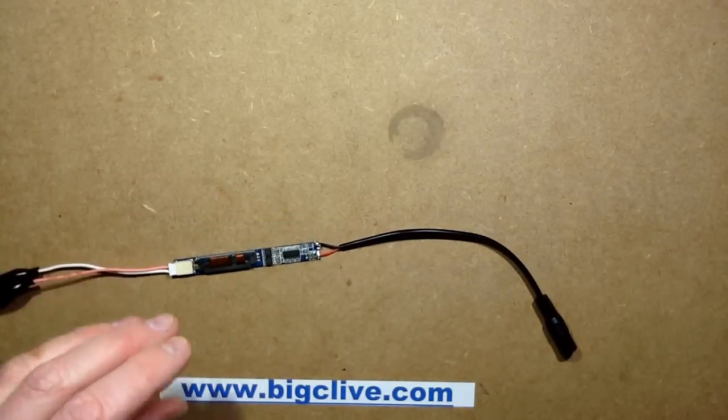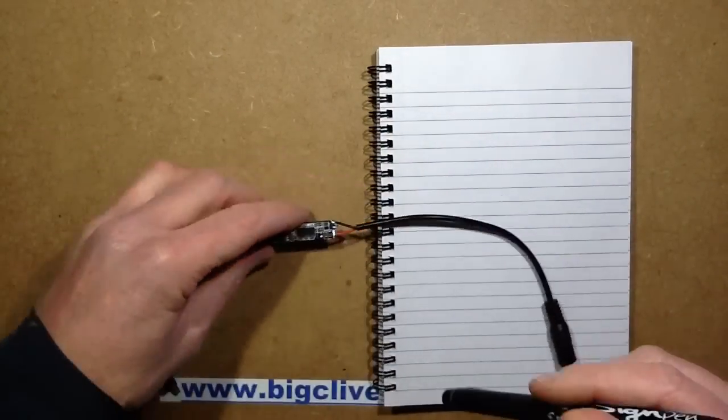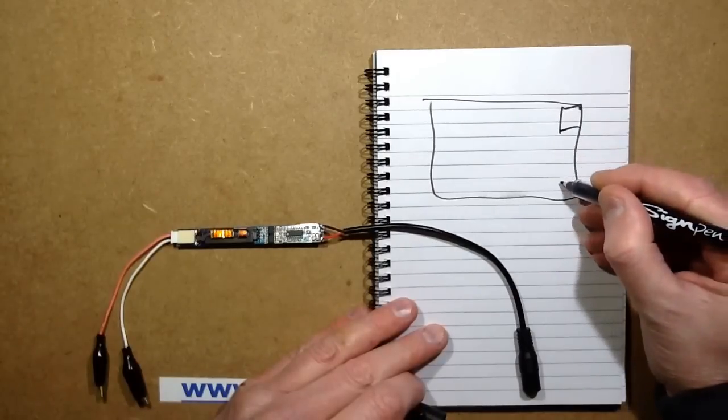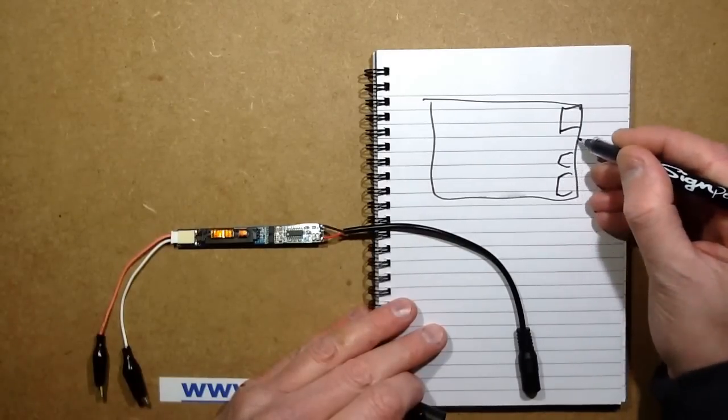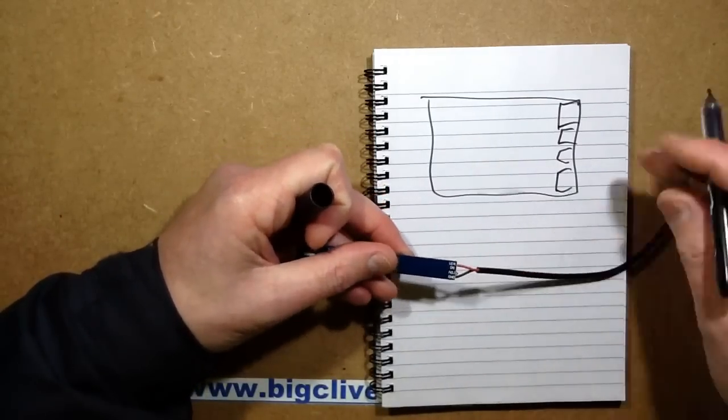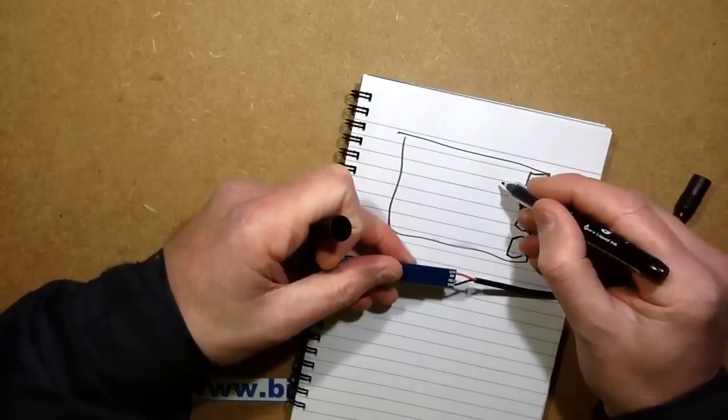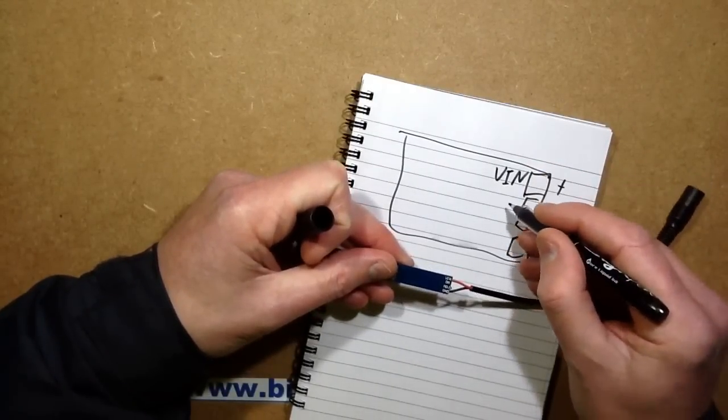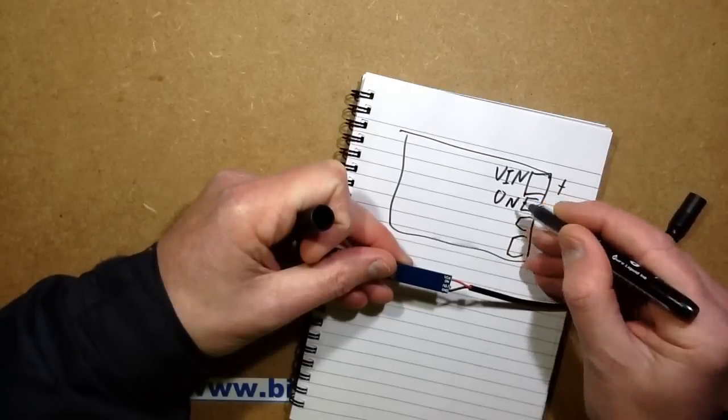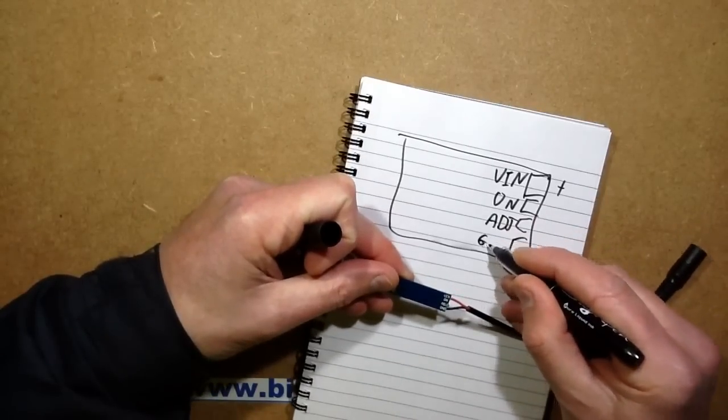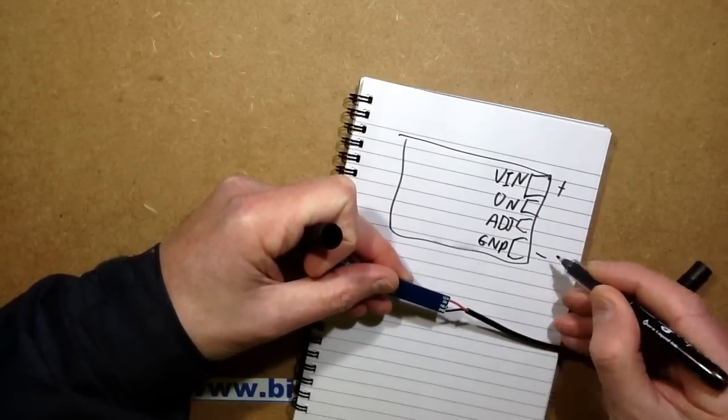Now it's worth noting that, once again, this has four connections. They're mounted at the end, and it's just solder pads. Fairly big solder pad, big one, and then a slightly smaller one, and a smaller one. And if you look at the back, just for reference, I'll just write it on here. It says V in, and that's the positive, on, that's the equivalent of enable, adjust, and ground. So that's the negative supply.